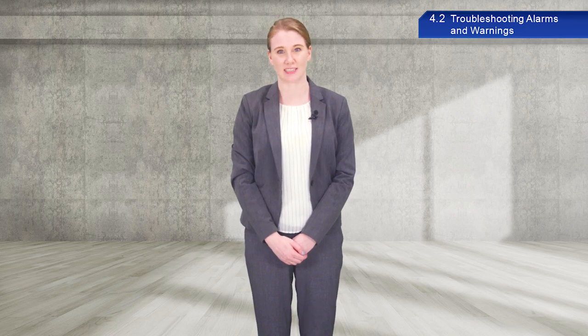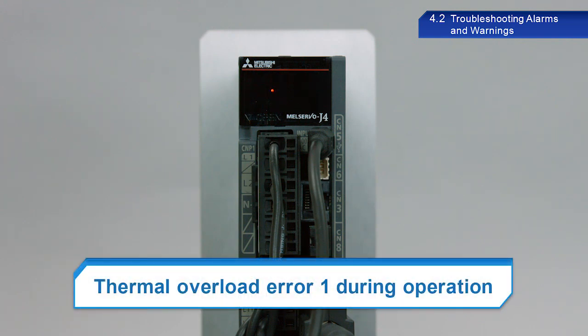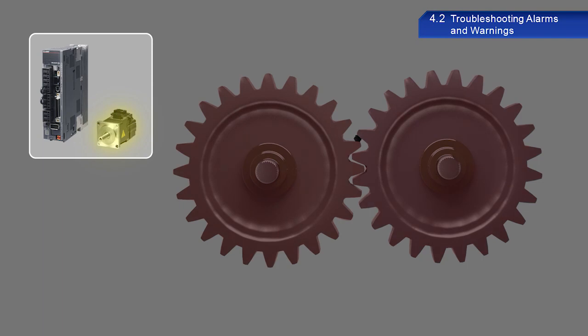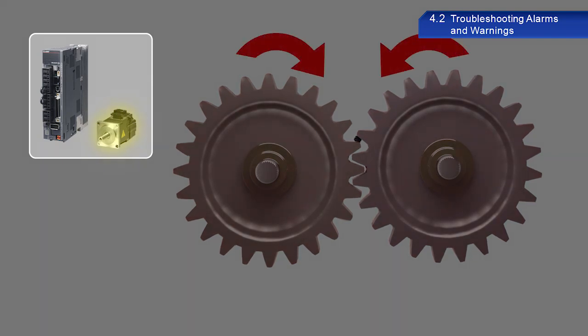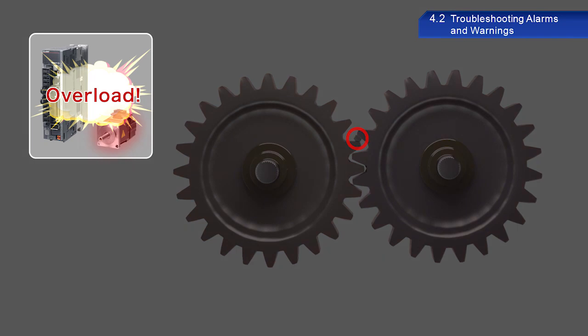Besides noise, harmonics and leakage current can also negatively affect servo systems. Alarm code 50.1 is the Thermal Overload Error 1 During Operation alarm. This alarm occurs when cables are disconnected or scrap material is jamming equipment. Objects can jam moving parts, causing excessive current to be output to try and move the part normally, which causes excessive load and triggers this alarm. If this happens, check mechanical parts carefully. If this alarm occurs when there are no mechanical issues, wiring may be disconnected or connected incorrectly, so check the wiring.